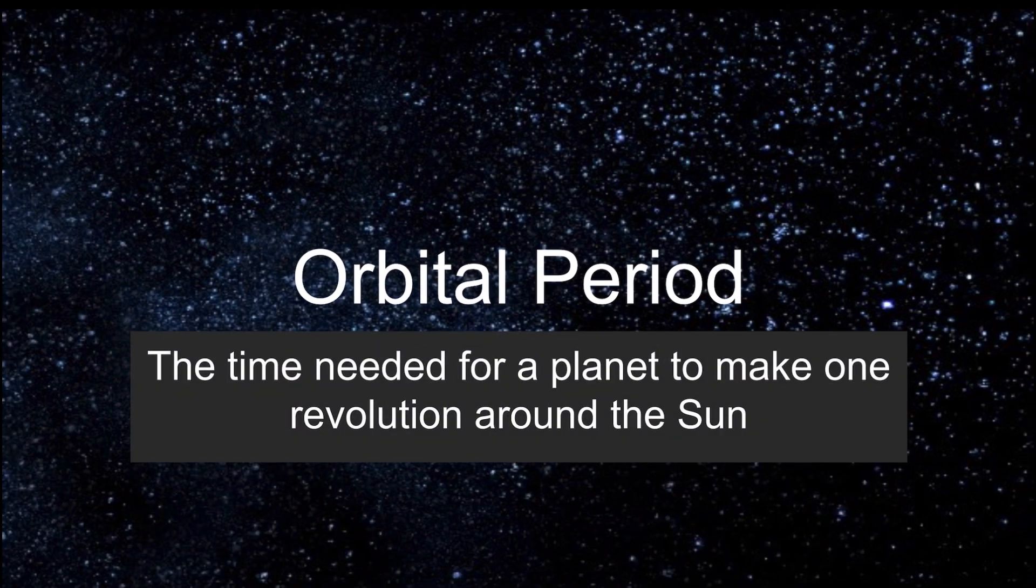This means that planets that need more time to make a full revolution have longer orbital periods, and planets that need less time to make a full revolution have shorter orbital periods.